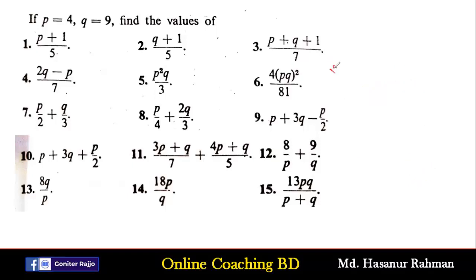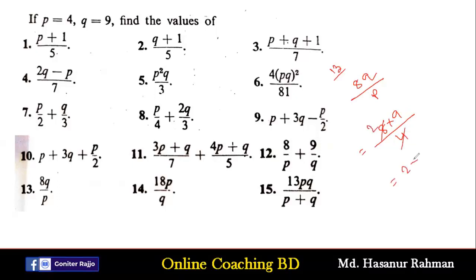Number 13 says 8q/p. The value of q is 9, so 8 multiplied by 9 divided by the value of p which is 4. We divide 8 by 4 to get 2, so 2 multiplied by 9 equals 18. That is the answer of number 13.